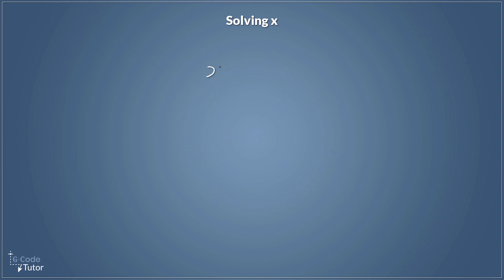Let's look at another one. This time let's look at x minus 2 — let's say x minus 2 equals 10. Whatever the value of x is, we take 2 from it and that equals 10. We know by looking at this that x must be 12, because 12 minus 2 equals 10. Mathematically, we use the same approach: we need to add 2 to this side to get rid of the minus 2. So x minus 2 plus 2 would just be x on its own.